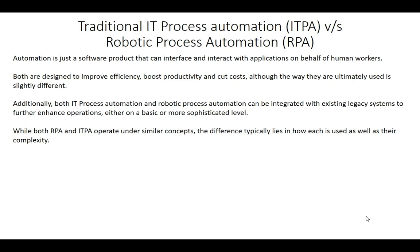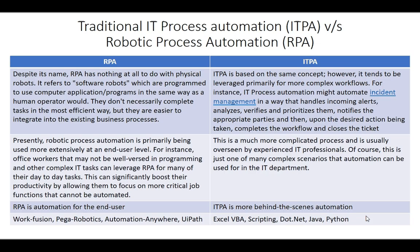Although the way they are ultimately used is significantly different. Additionally, both IT process automation and robotic process automation can be integrated with existing legacy systems to further enhance operations at a more sophisticated level. While both RPA and traditional IT process automation operate under similar concepts, the difference typically lies in how they are used as well as their complexity.